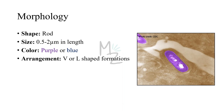Morphology. Listeria monocytogenes is rod-shaped. In terms of size, it varies in length from 0.5 to 2 micrometers. It's purple or blue in color due to the presence of a thick peptidoglycan layer in its cell wall. As you can see in this picture, it is this thick peptidoglycan layer that stains it purple. It is arranged in V or L-shaped formations when seen under a microscope, and these formations are similar to Corynebacterium diphtheriae.